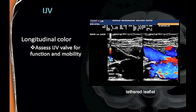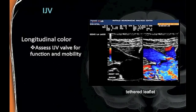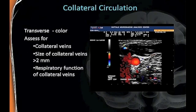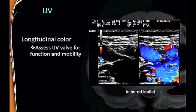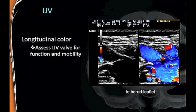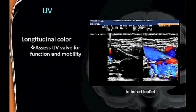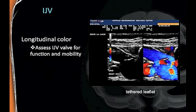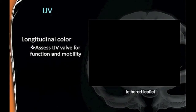Now you have to assess your valve for function and mobility. I term this a tethered leaflet—there's no actual official term for it. As you can see, this leaflet is not moving much. The flow is going around, but the leaflet is being held there. Even with the pressure of blood flow coming down, it won't open up—it's actually tethered to the wall. So the flow can get through, but not totally through. That's a tethered leaflet, and it does cause bidirectional flow.